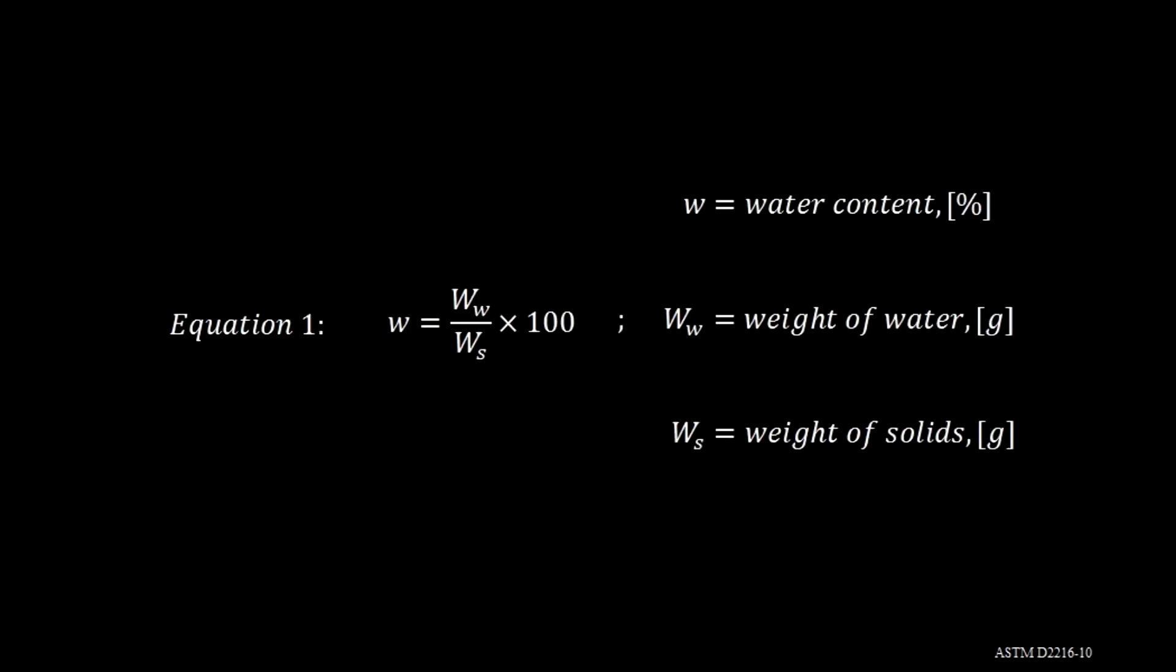The final steps in the ASTM procedure are the calculations. This is done simply by calculating the water content of each specimen using equation 1. Equation 1 is represented as the weight of the water over the weight of the solids multiplied times 100. This is presented as a percentage.